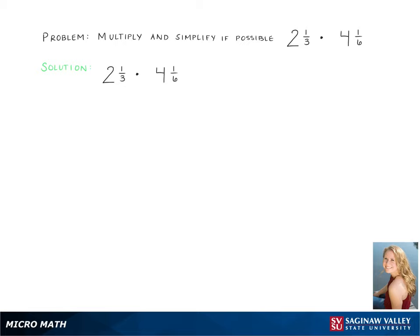Here we are multiplying the mixed numbers 2 and 1/3 and 4 and 1/6. The first step in this problem is to take these mixed numbers and turn them into improper fractions. 2 and 1/3 becomes 7/3, and 4 and 1/6 becomes 25/6.